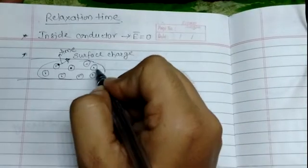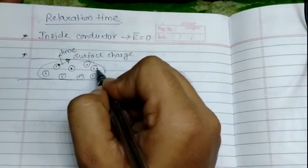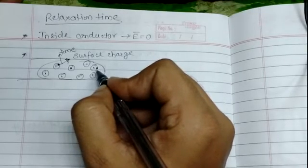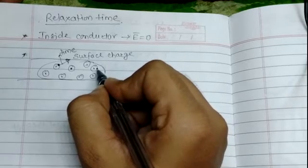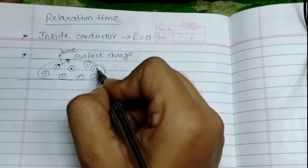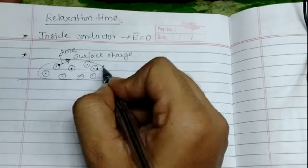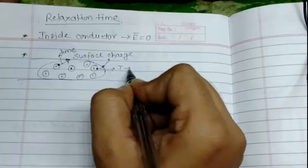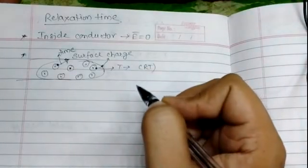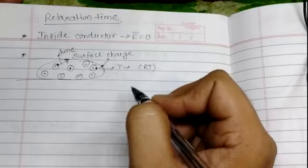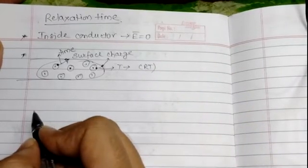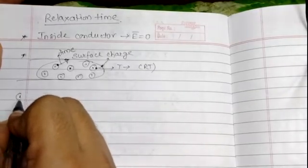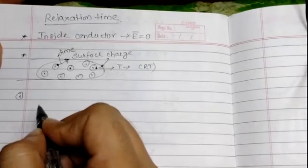The valence electron is the electron present in the outer orbit of the molecule. The time taken by that valence electron to appear on the surface as a surface charge is known as the relaxation time. So to derive an expression for relaxation time, we proceed as follows.